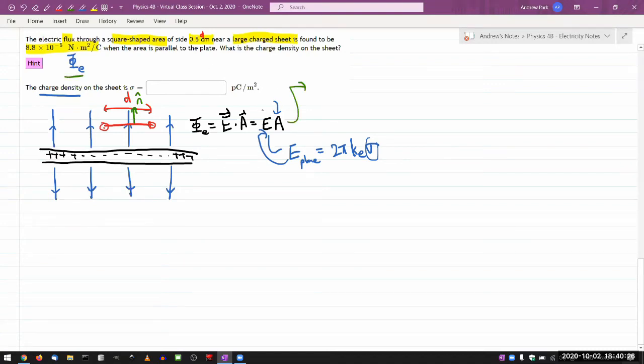Since we are given the flux and we are looking for sigma, the equation that you're solving for is the flux is equal to the electric field 2 pi K sigma times the area D squared for the square area. Solve it for sigma, then you get sigma is equal to the electric flux divided by 2 pi K, Coulomb constant, D squared. So in this expression, you know everything, everything's given...